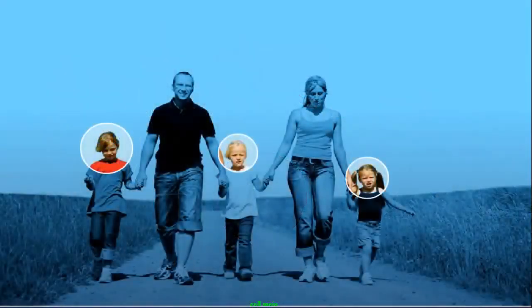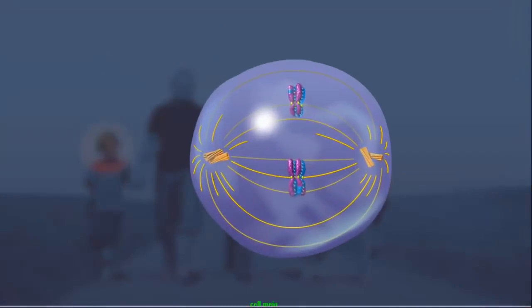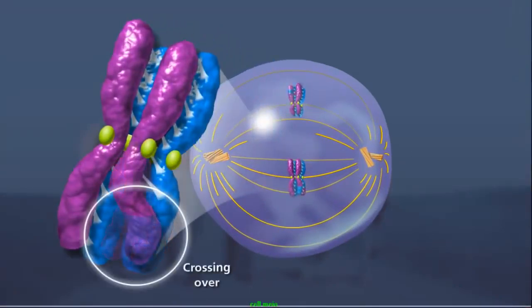But why aren't siblings identical? The diversity comes from several sources. In prophase I, non-sister chromatids can exchange DNA through crossing over, increasing the genetic diversity of individual chromatids.